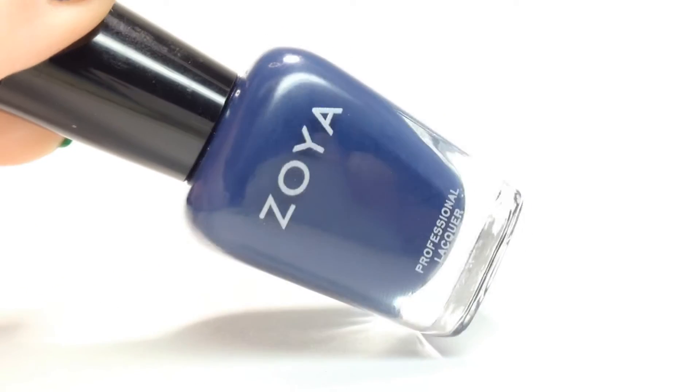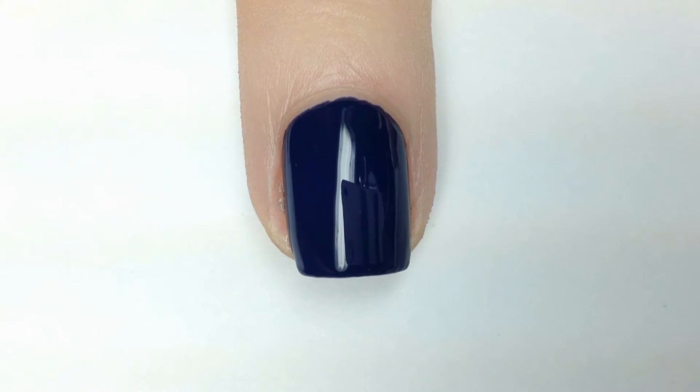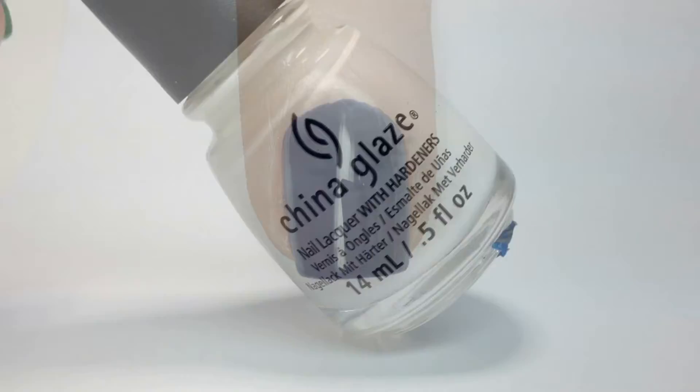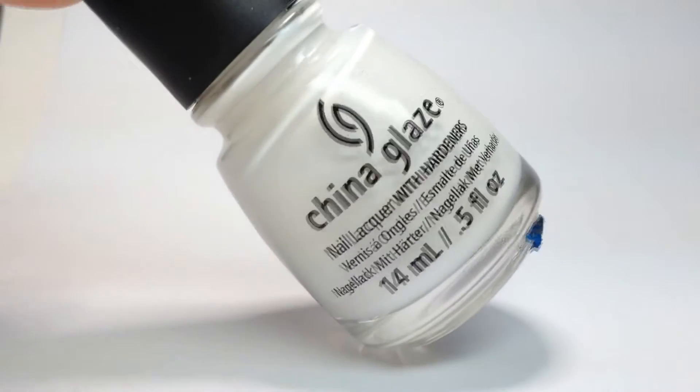I'm starting out with a base of Sailor by Zoya, applying it to my middle nails only. I then painted the remaining nails white on white by China Glaze.